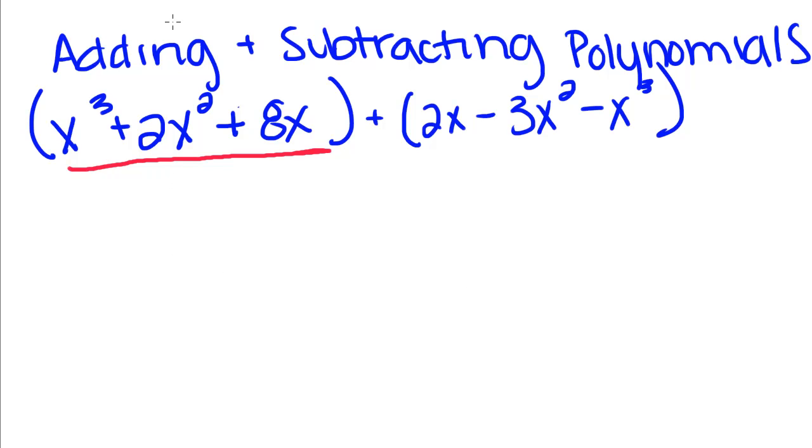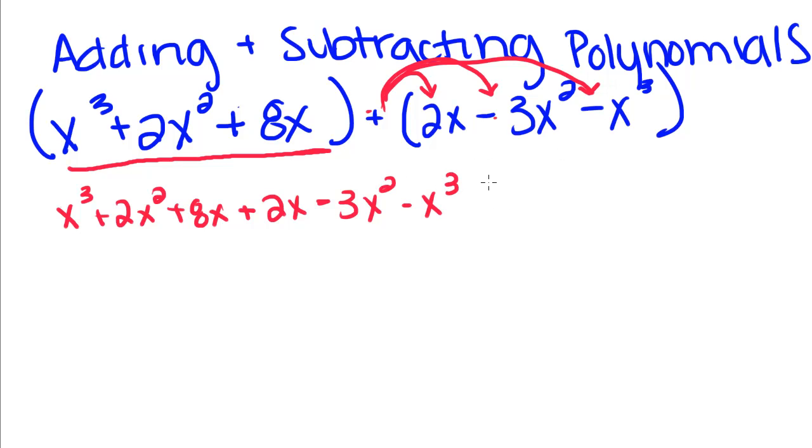So what we're going to do is first we're going to rewrite this, and we're going to distribute this positive one to each one of these terms and drop the parentheses on both polynomials. So this is x cubed plus 2x squared plus 8x. That part stays the same. And this is plus 2x, and positive times negative stays negative 3x squared. This also stays negative, x cubed.